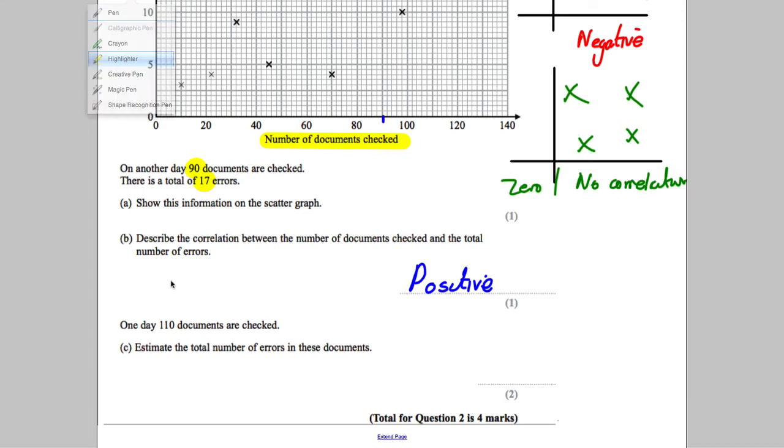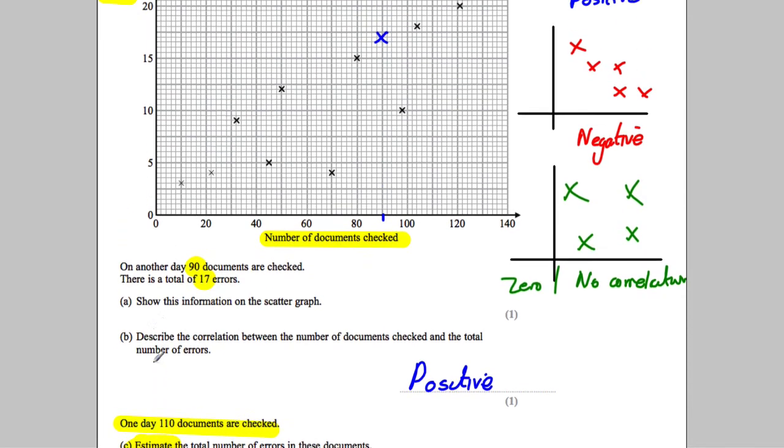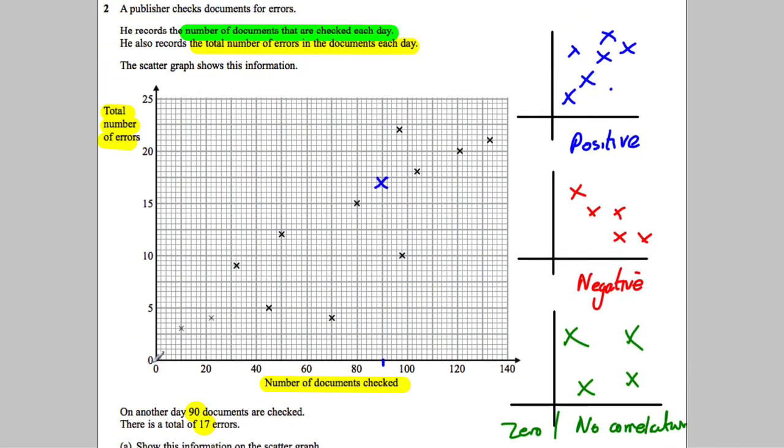One day 110 documents are checked. Estimate the total number of errors in those documents. In order to be able to estimate that, you will read up from 110 documents being checked, so you're going to need a line coming up from 110, which is like that. Now that line doesn't go through any point, so you need a line of best fit. A line of best fit tries to go through as many of these as possible with the same number on top as on bottom.